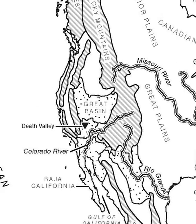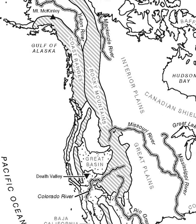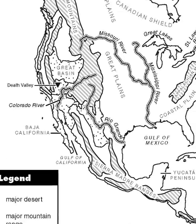The Rocky Mountains run from Alaska to New Mexico and extend southward into Mexico. In Mexico, they are called the Sierra Madres.